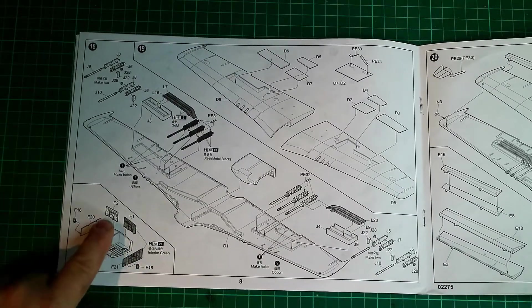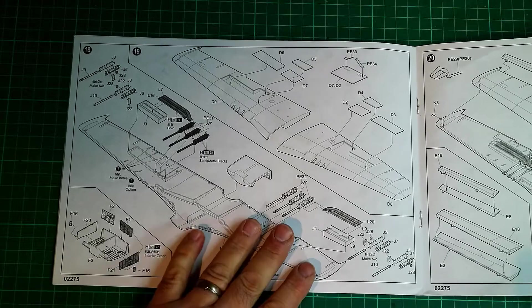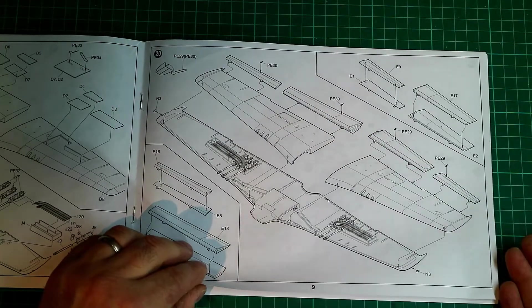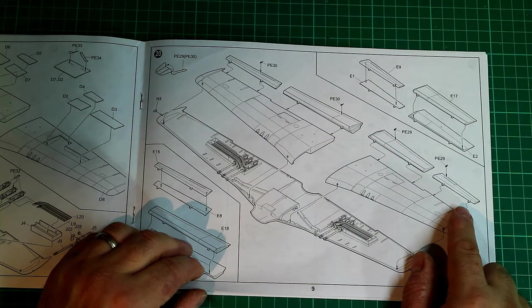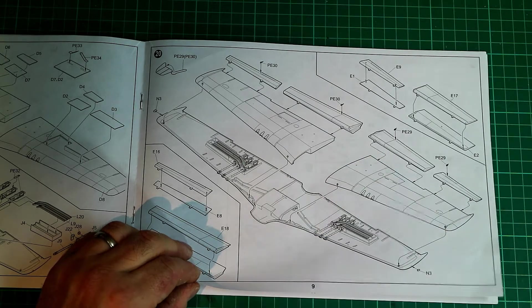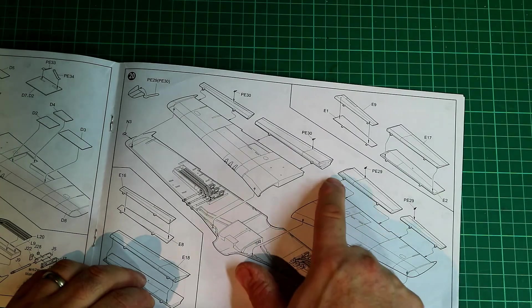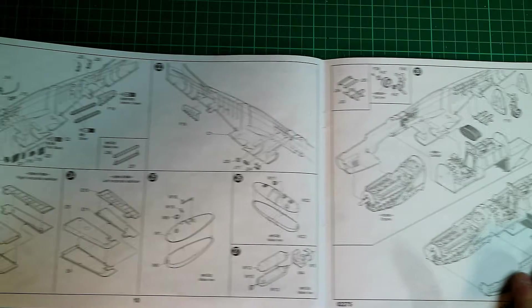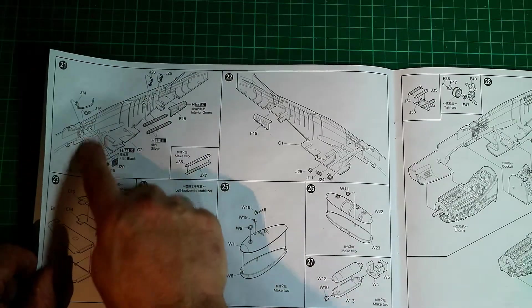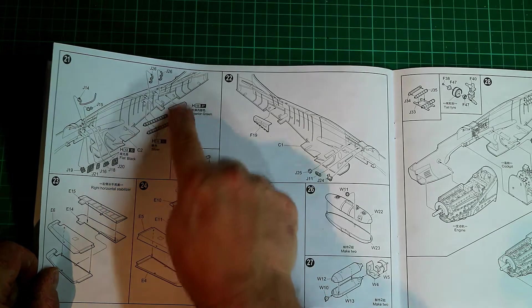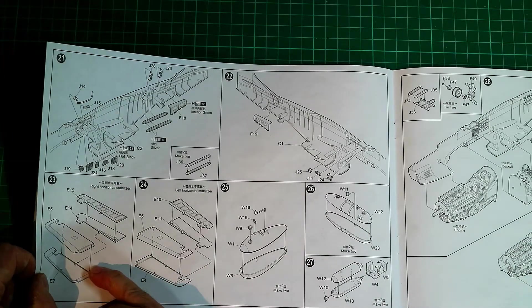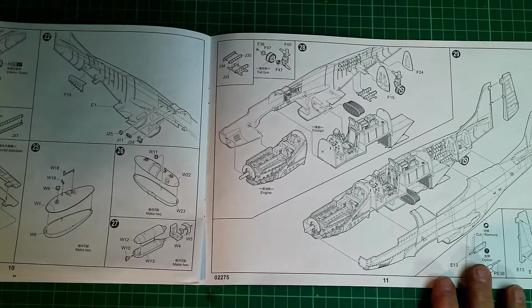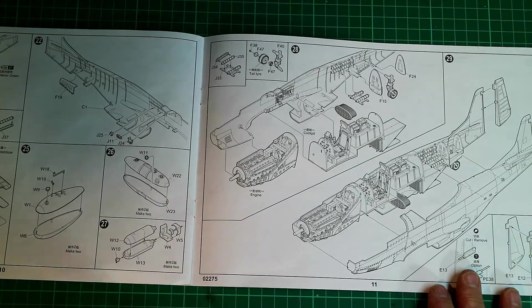Wheel bay again looks quite detailed from here, but I guess we'll see when we look at the parts. Various bits for the flaps etc. going on here. They can be, I guess, although they don't indicate, they could be posed down. I'd imagine with a bit of careful chopping off the tabs you can probably do something with those if you wanted to. Horizontal stabilizers, we've got a couple of different fuel tank options and a bomb. Make two, make two, make two, so you've got different options there.